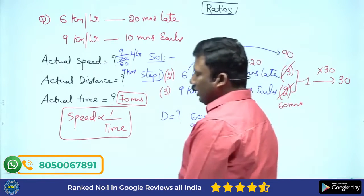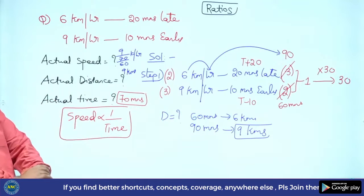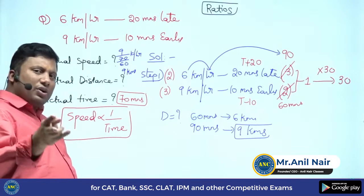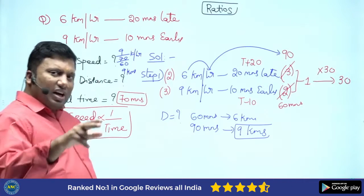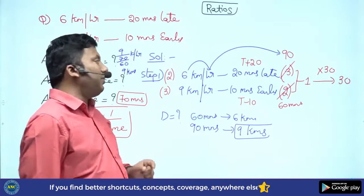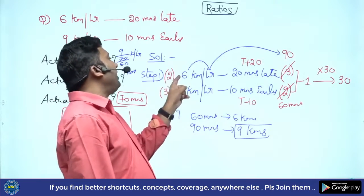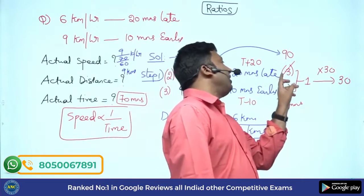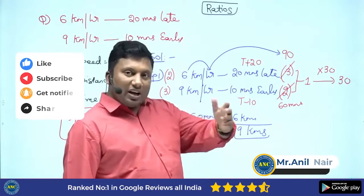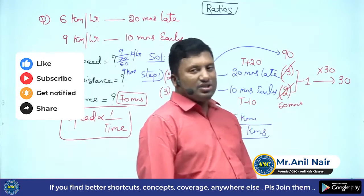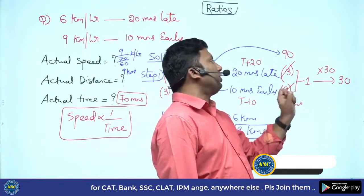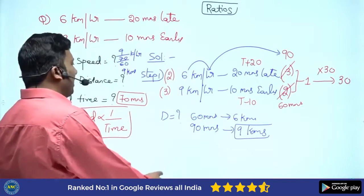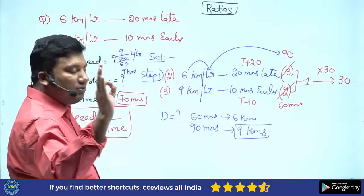Actual speed = distance ÷ time = 9 ÷ (70/60) kilometers per hour. To recap: speed ratio 2:3, time ratio 3:2, difference is 1 but in the question the difference is 30, so multiply by 30. 3×30 = 90 minutes, t+20 = 90, so t = 70 minutes.